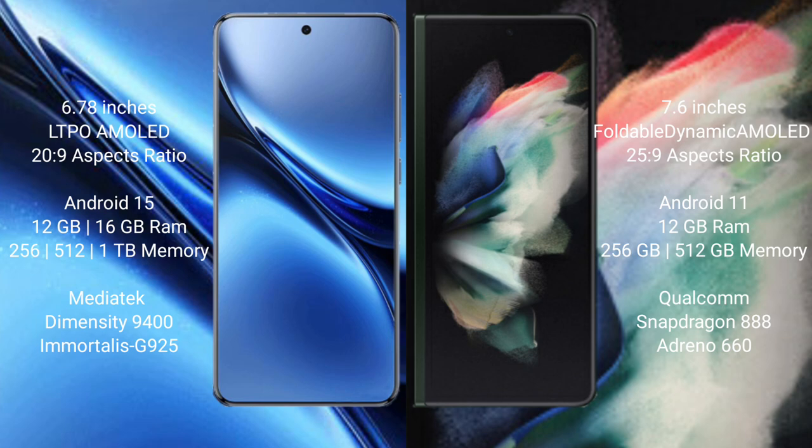The Vivo X200 Pro comes with 12GB or 16GB RAM and 256GB, 512GB, or 1TB internal storage, with a Dimensity 9400 processor and GPU. The Samsung Galaxy Z Fold 3 comes with 12GB RAM and 256GB or 512GB internal storage, powered by the Qualcomm Snapdragon 888 processor with Adreno 660 GPU.